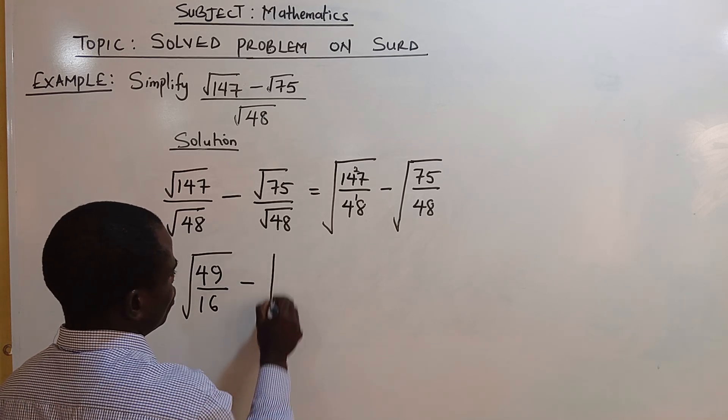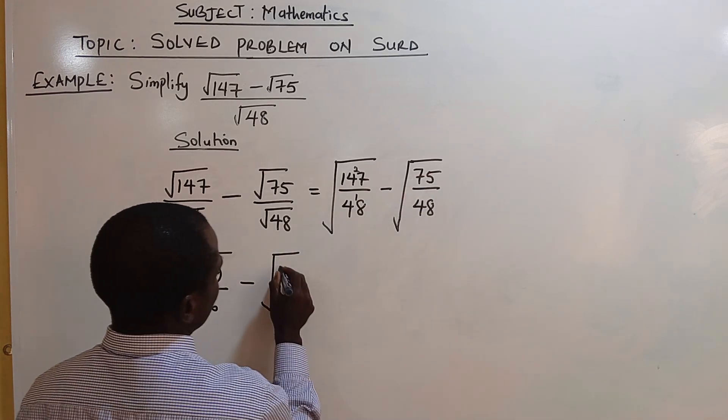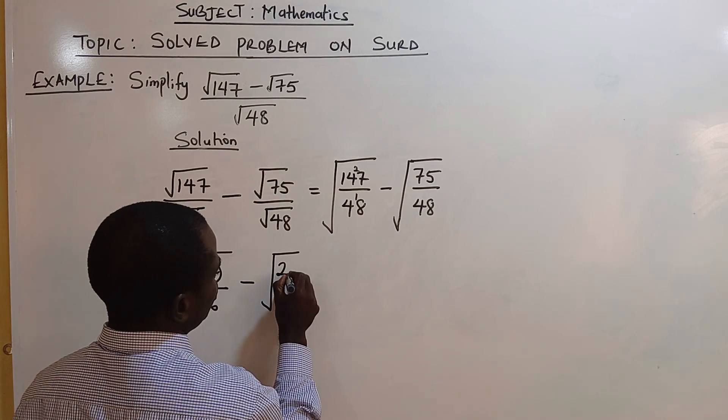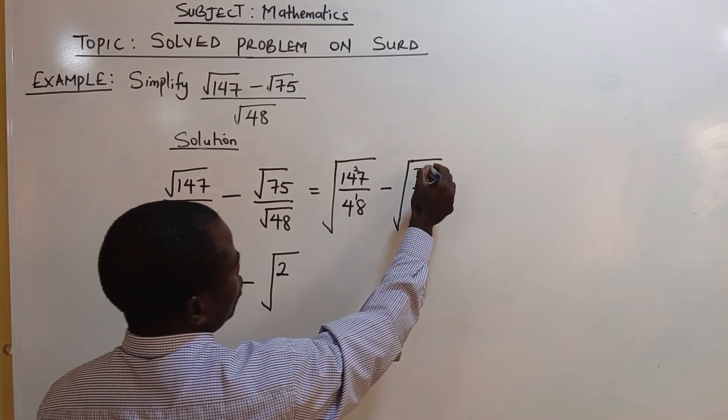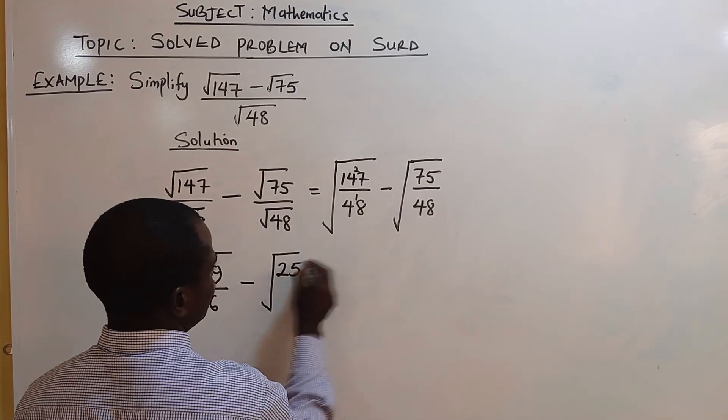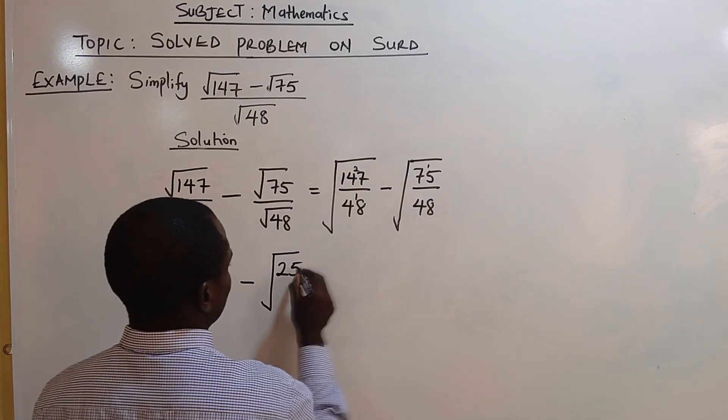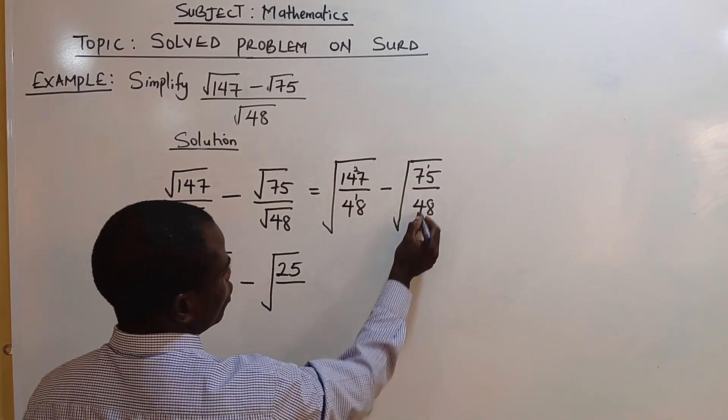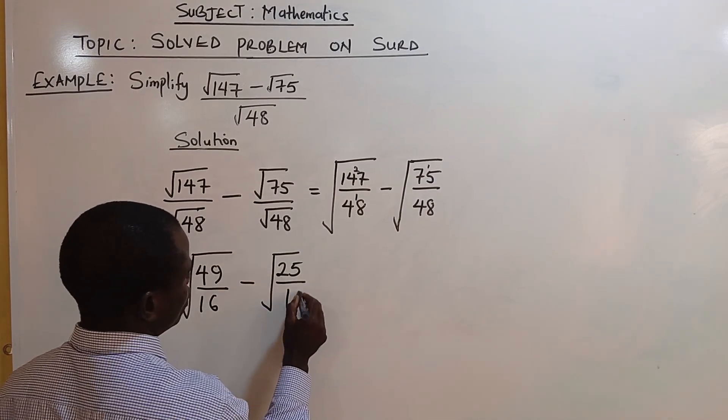Minus square root of: 3 goes into 75, that is 2... 3 goes into 15, that is 5. 3 goes into 48, that is 16. That is clear now.